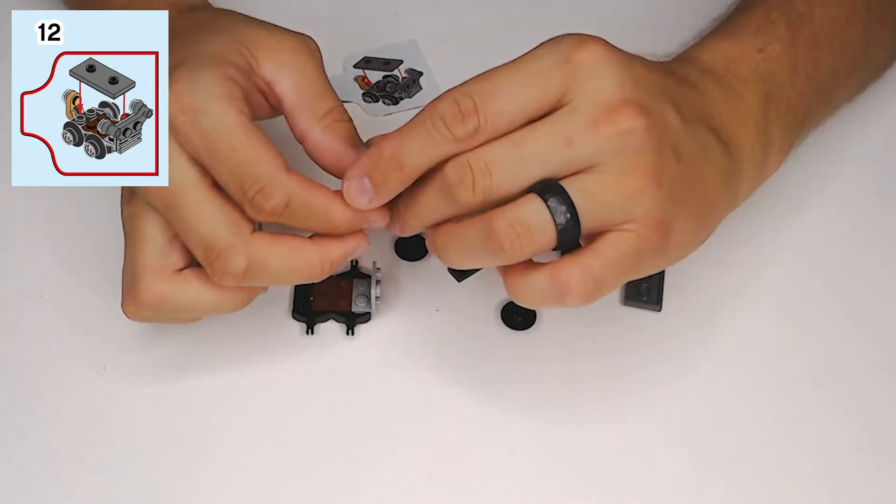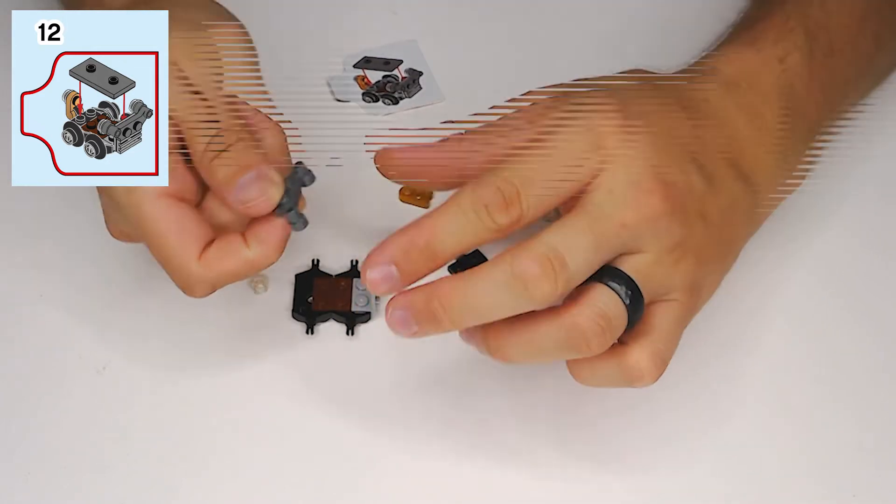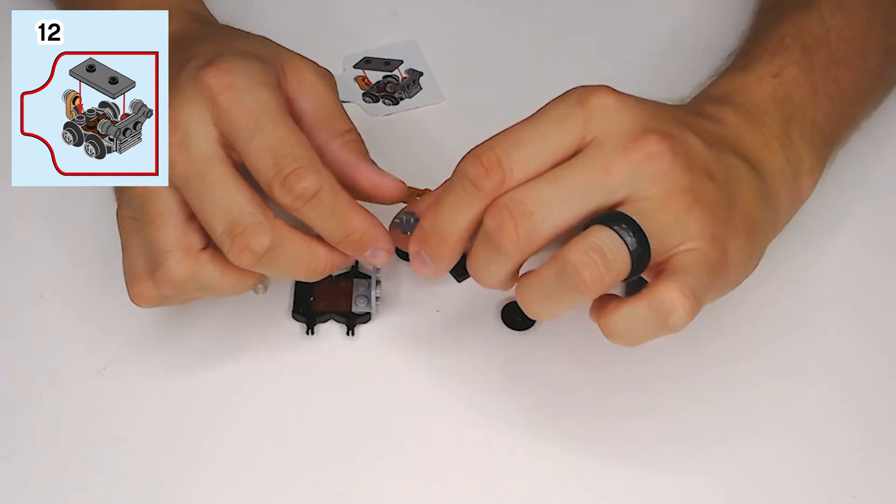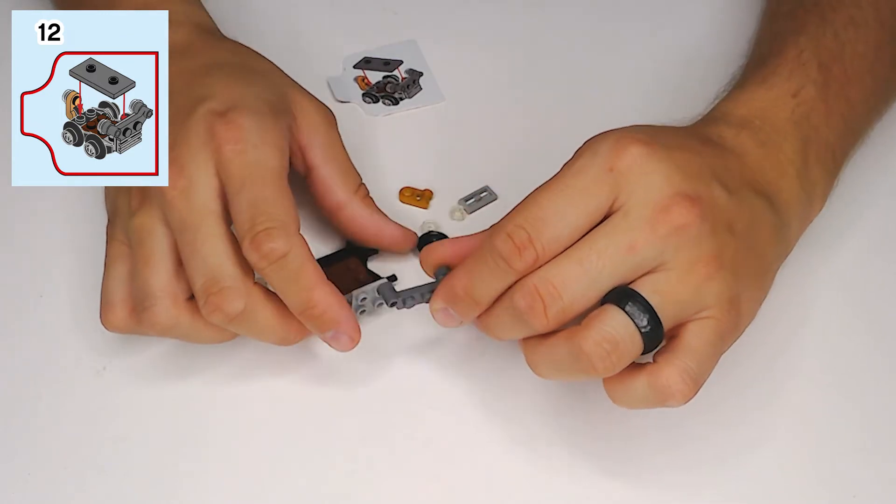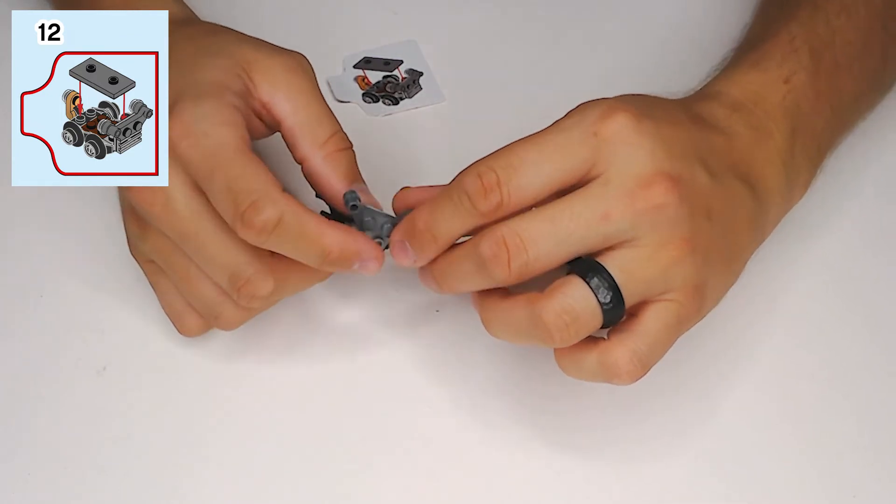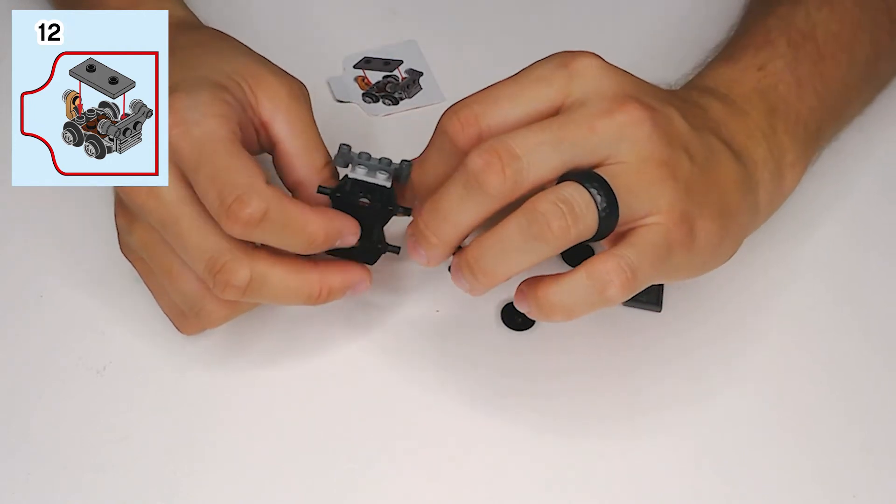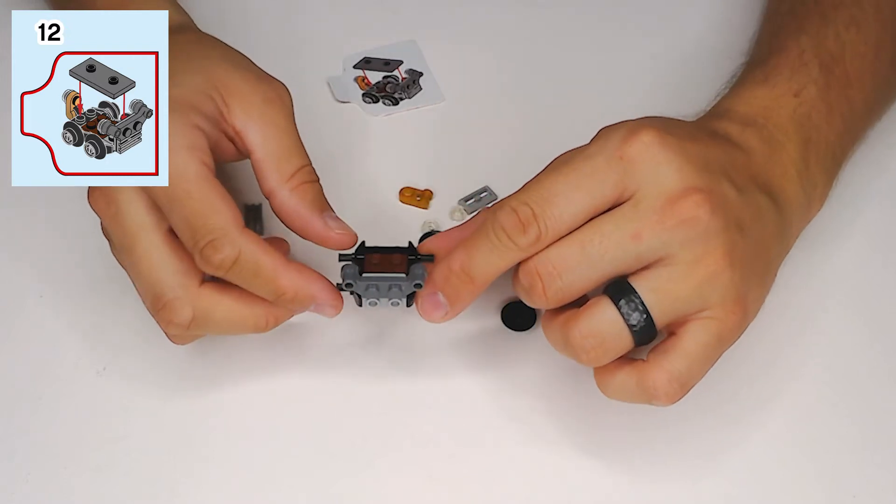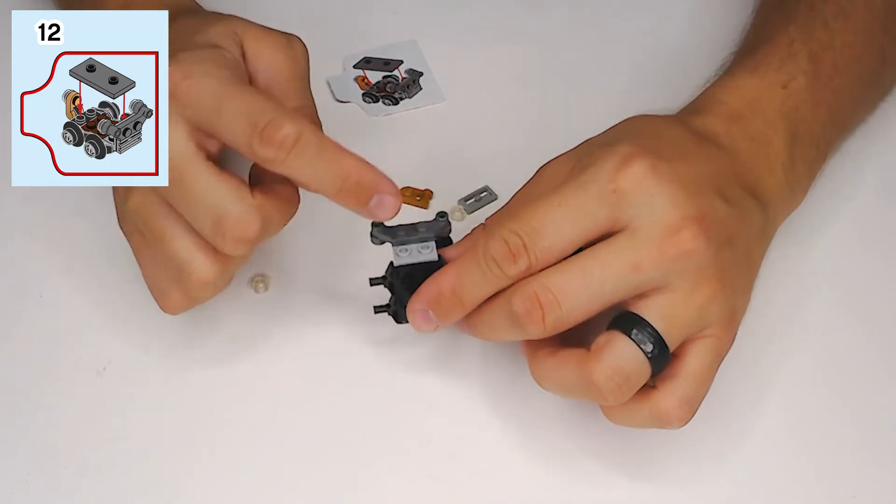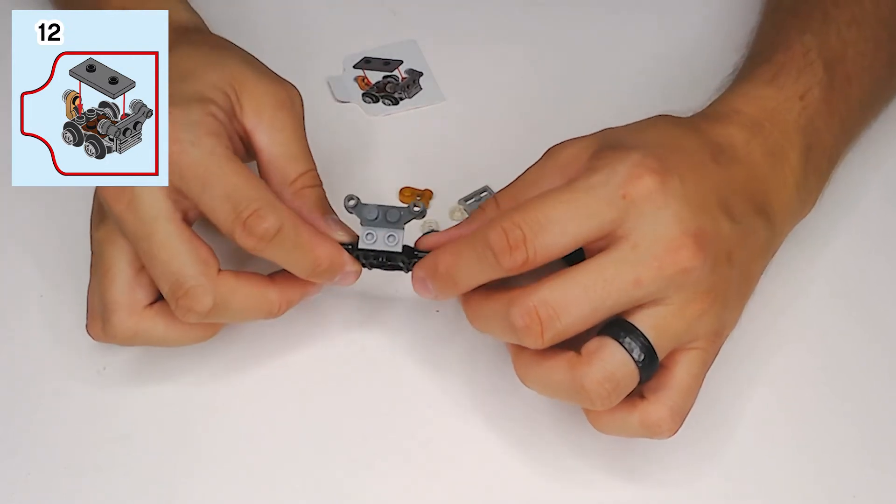It must be kind of a jet pack kind of thing. But anyway, so this gray little piece, I'm just going to call it a hammerhead piece. So the hammerhead piece going on like that onto the top row of studs of that side facing 2x2 plate.